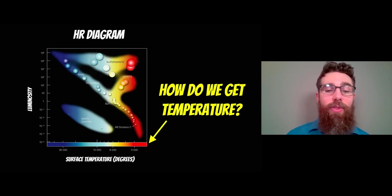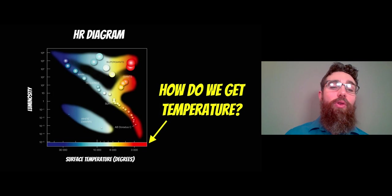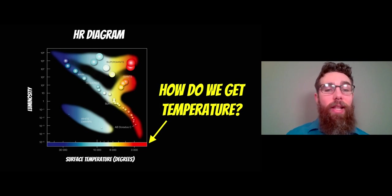You'd have white dwarfs down at the bottom left, main sequence stars in a diagonal through the middle, and giant stars up towards the top and over to the right. But the x-axis is the surface temperature, so how do we actually get that?